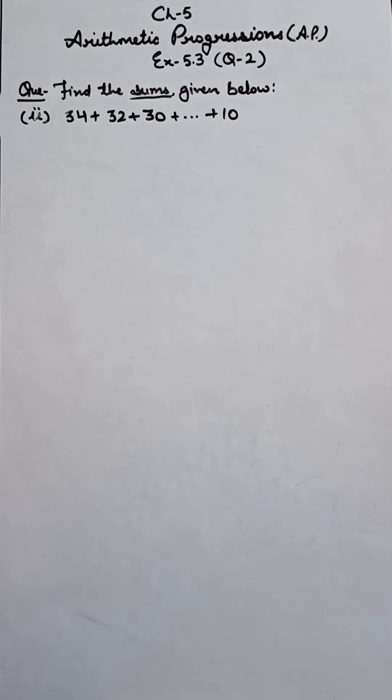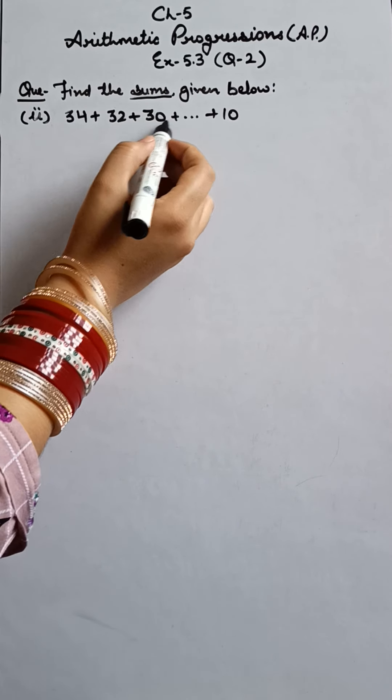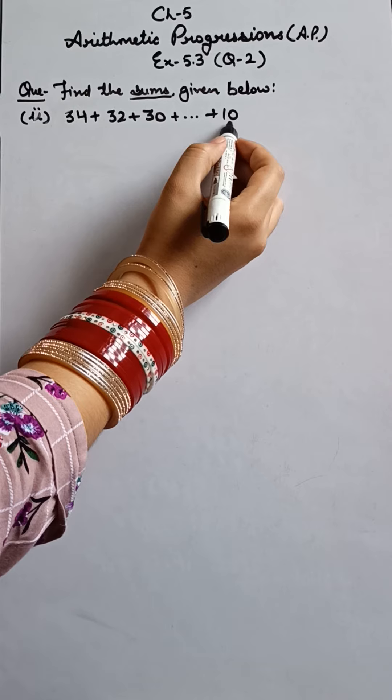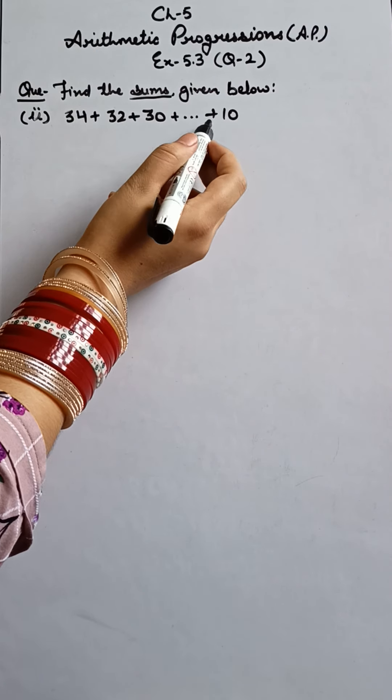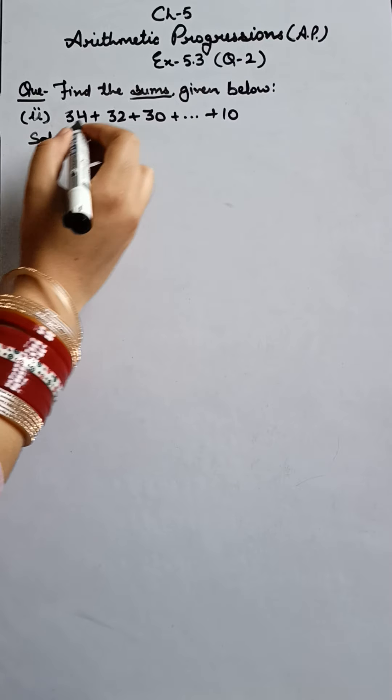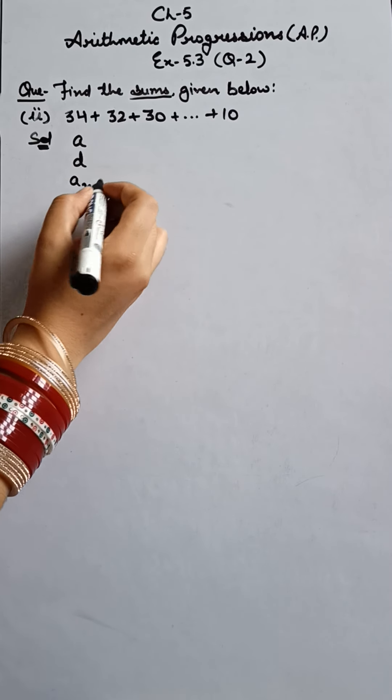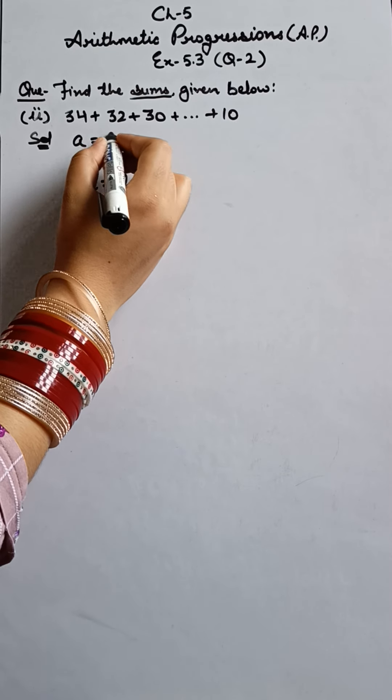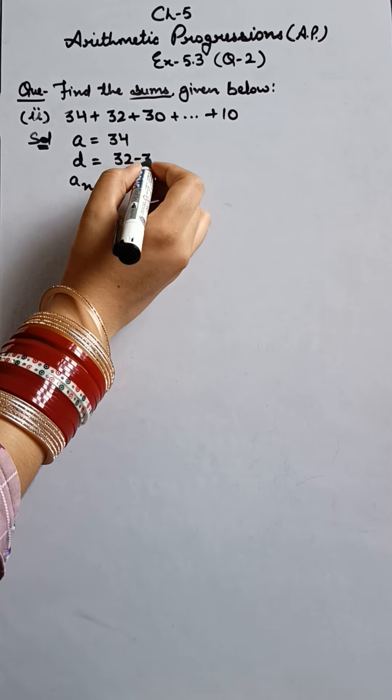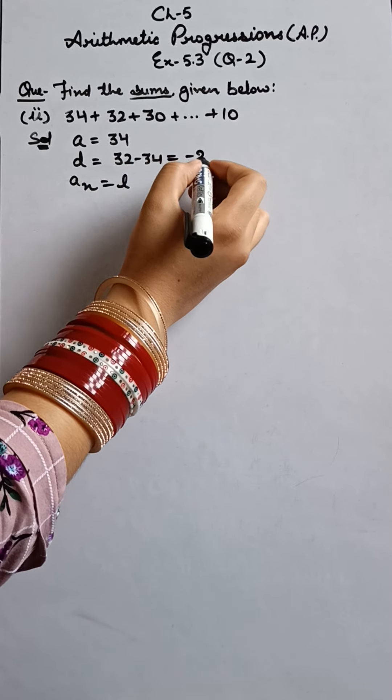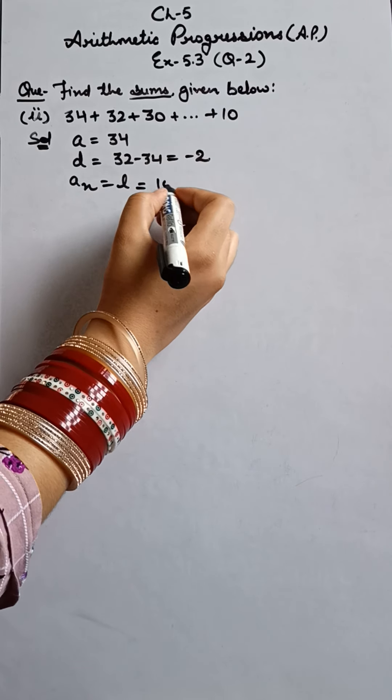So this is our second part. And the AP is 34, 32, 30 and so on, and the last term is 10. You can see it's in decreasing order. Okay. So in our solution, we have to find A, D. And we are given the last term. What is A? 34. What is D? Second term minus first term. It is negative 2. And the last term given to us is 10.